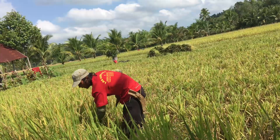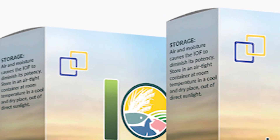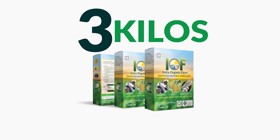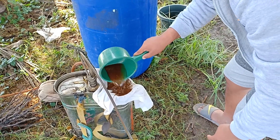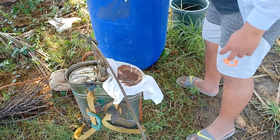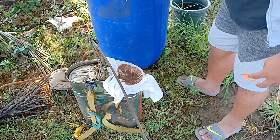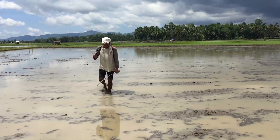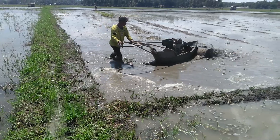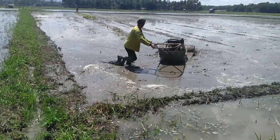From land preparation to harvest, three kilos is good for six applications. Even if it's the first time using IOF, automatically 50% less fertilizer will be deducted from the regular usage. We highly recommend using the first application during the land preparation.